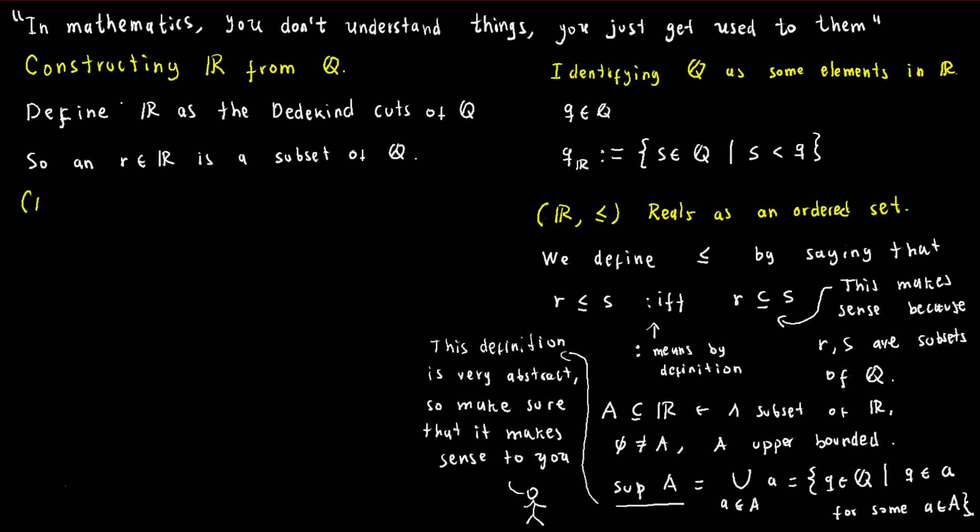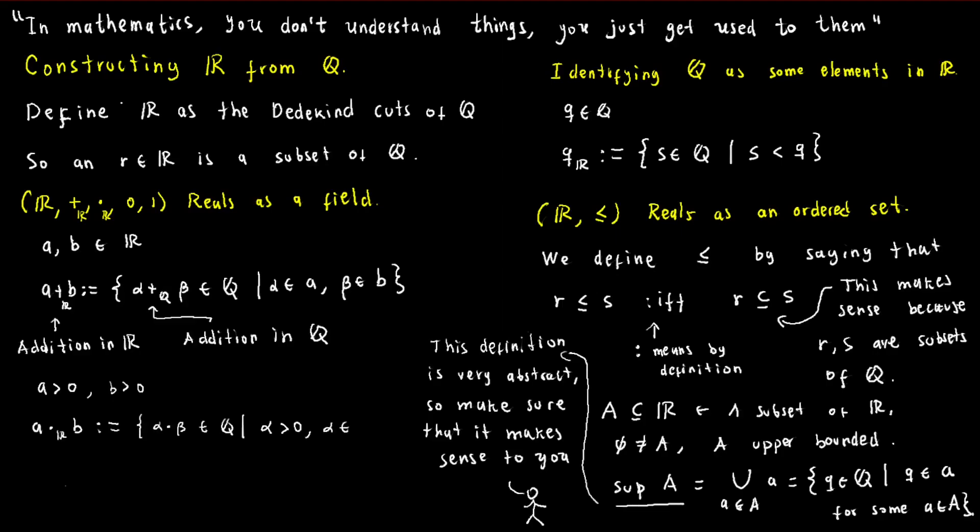The construction of the real numbers requires the definition of addition and multiplication. To define the addition of two real numbers a and b, we consider the sets corresponding to a and b, and define the sum of a and b as the set of all elements alpha plus beta, where alpha is a member of the set corresponding to a, and beta is a member of the set corresponding to b.